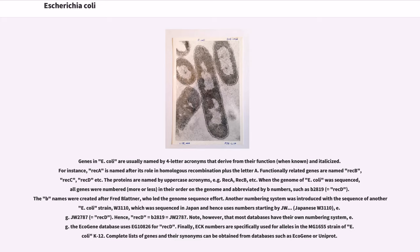Note, however, that most databases have their own numbering system; for example, the EcoGene database uses EG10826 for recD. Finally, ECK numbers are specifically used for alleles in the MG1655 strain of E. coli K12. Complete lists of genes and their synonyms can be obtained from databases such as EcoGene or UniProt.